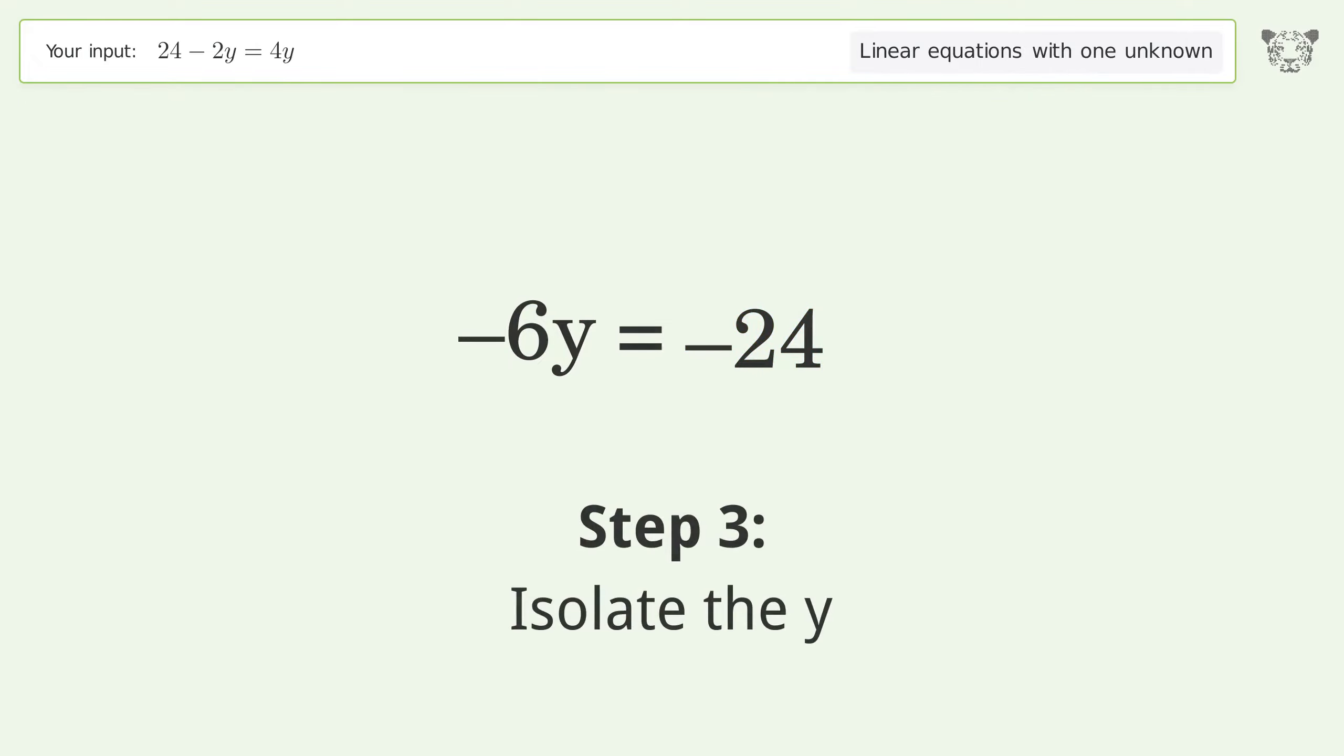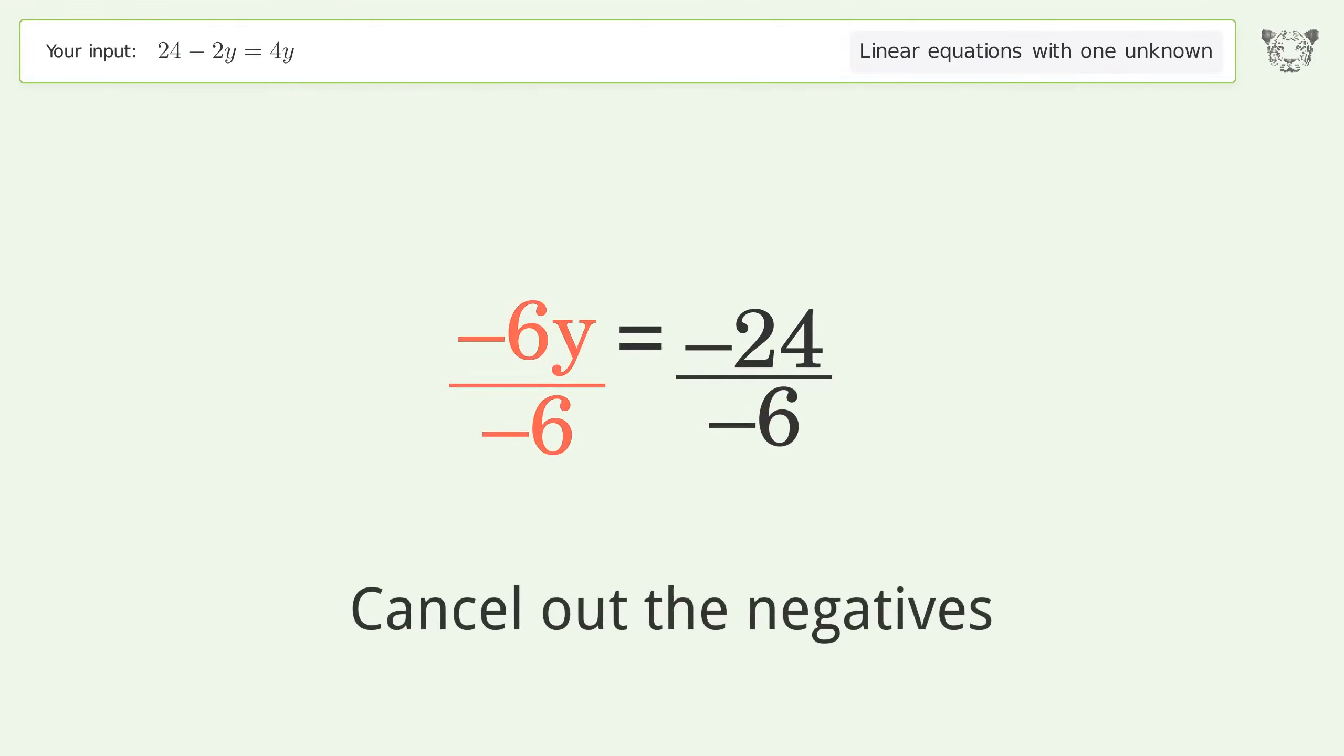Isolate the y. Divide both sides by negative 6. Cancel out the negatives.